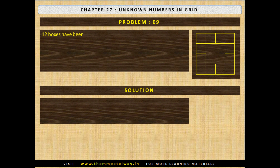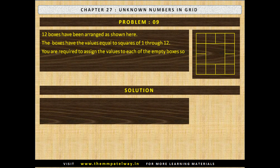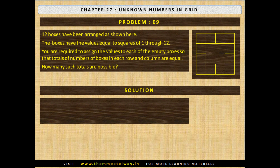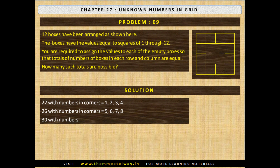Problem 9. Twelve boxes have been arranged as shown. The boxes have the values equal to squares of 1 through 12. You are required to assign the values to each of the empty boxes so that the total of numbers in each row and column are equal. How many such totals are possible? Now stop the video and solve the problem. The solution is shown. A total of 22 is possible with numbers in corners 1, 2, 3 and 4. A total of 26 is possible with numbers in corners 5, 6, 7 and 8. And a total of 30 is possible with numbers in corners 9, 10, 11 and 12. You can put the rest of the numbers accordingly.